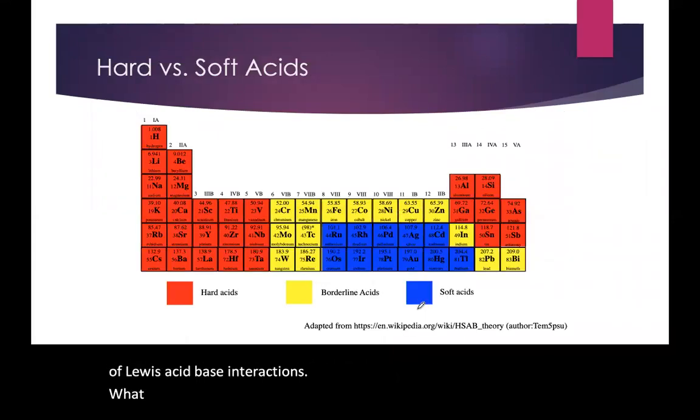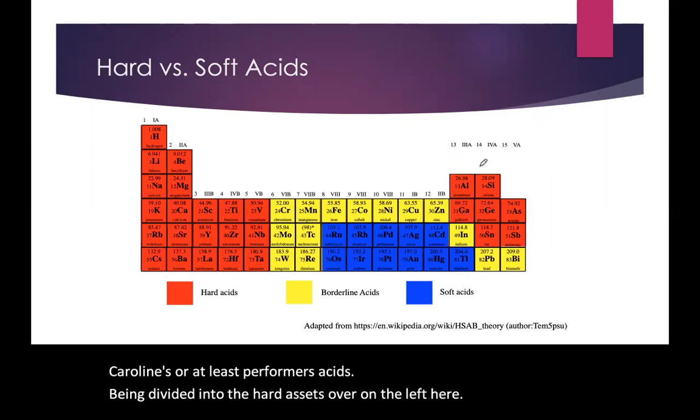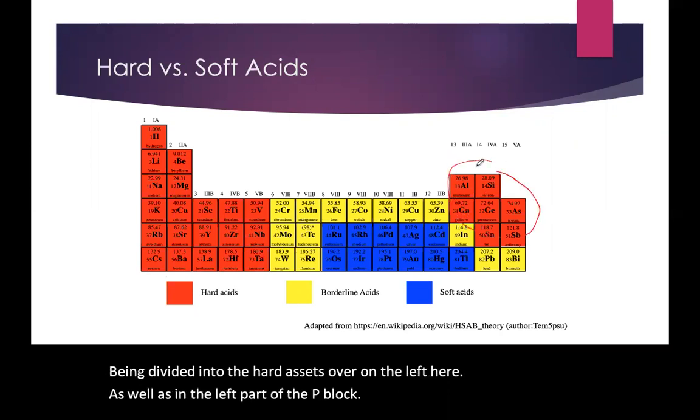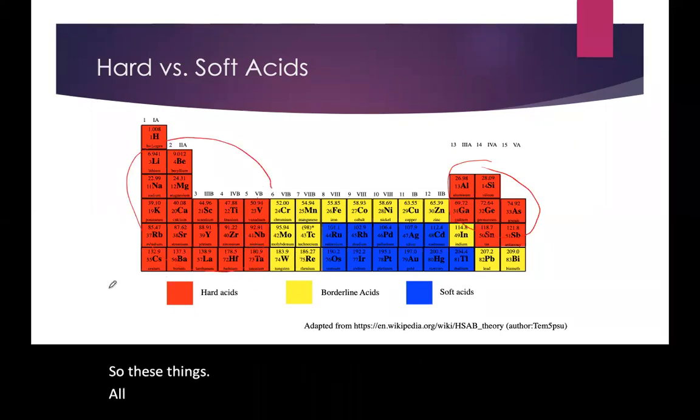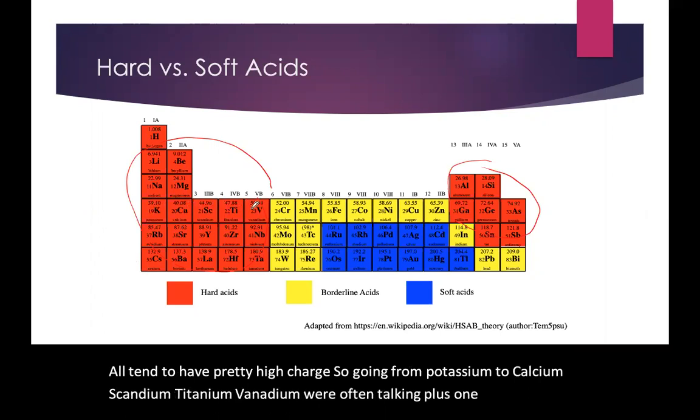What this leads to is a portion of the periodic table that's likely to form cations or at least perform as acids. So these things all tend to have pretty high charge. Going from potassium to calcium to scandium, titanium, vanadium, we're often talking plus one, plus two, plus three, plus four, plus five very commonly in nature.